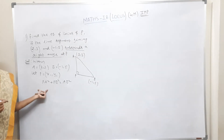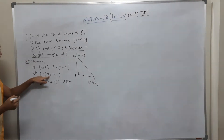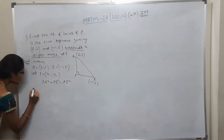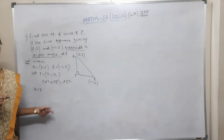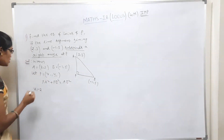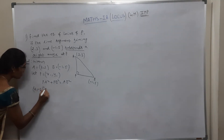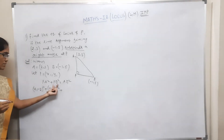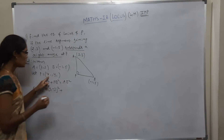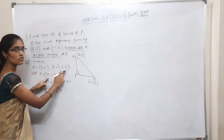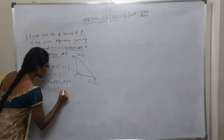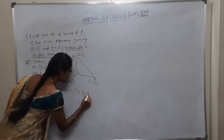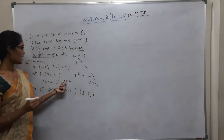PA² is the distance between points P(x1,y1) and A(2,3). Using the distance formula: PA² = (x1−2)² + (y1−3)². PB² is the distance between P(x1,y1) and B(−1,5): PB² = (x1+1)² + (y1−5)².